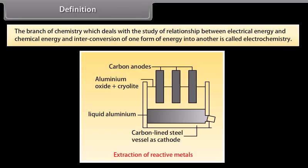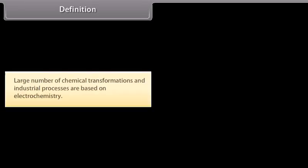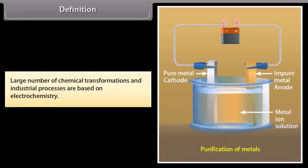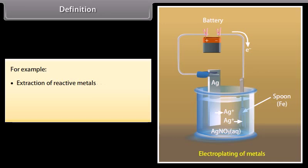Definition: The branch of chemistry which deals with the study of relationship between electrical energy and chemical energy, and interconversion of one form of energy into another, is called electrochemistry. A large number of chemical transformations and industrial processes are based on electrochemistry, for example extraction of reactive metals, purification of metals, and electroplating of metals.